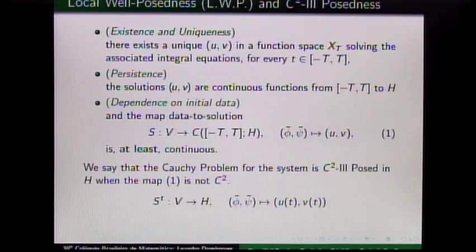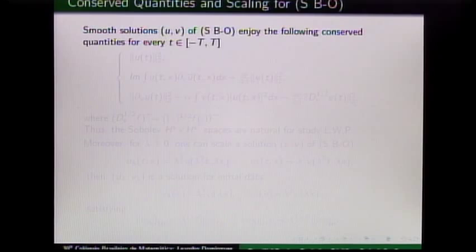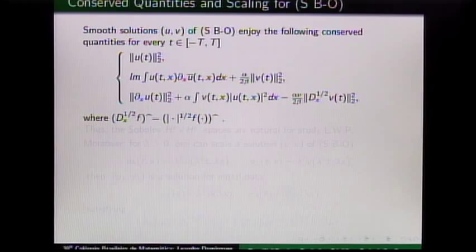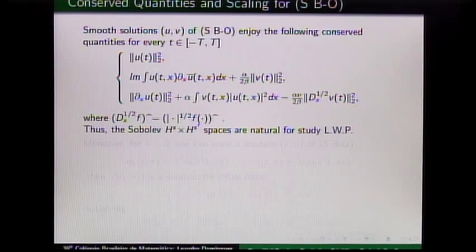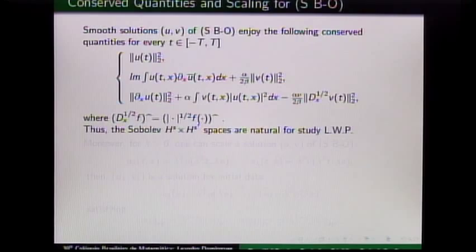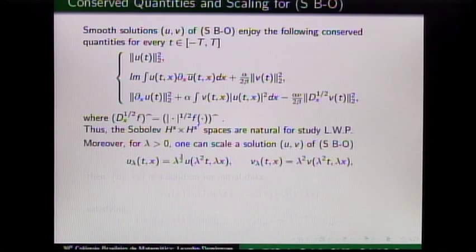Smooth solutions of the system enjoy the following conserved quantities. One can see, especially from these conserved quantities, that H-type Sobolev spaces are natural to study local well-posedness. And S prime equals S minus one-half seems to be a natural choice because we have a difference of a half in derivatives. Actually, there is a remark in their paper justifying the choice S prime equals S minus one-half using the scaling properties of the system.